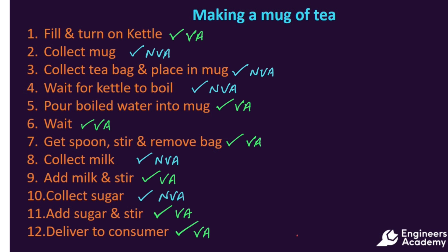Our categories for our process steps seem fairly clear cut. However, if we examine each a little more closely, we will see that perhaps it is not quite so straightforward. Take step 1 for instance — the filling of the kettle. If we are making one mug of tea and we put more water in the kettle than is necessary, then we are creating waste because we use more time to fill it, more time to boil it, and more energy is wasted in the process. In step 2, we have categorised collecting the mug as non-value added, and this is fine if the storage is situated quite close to our workstation.